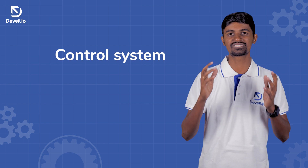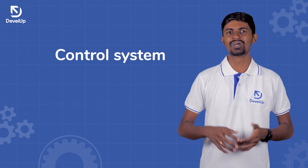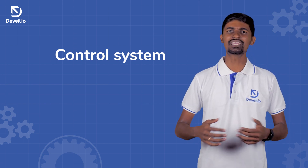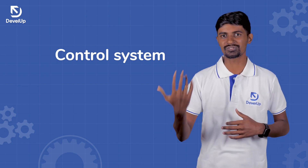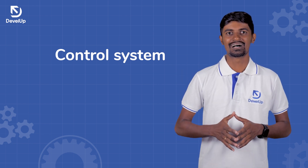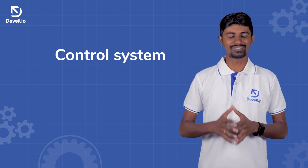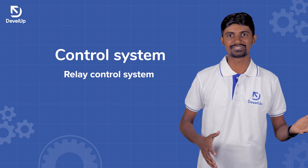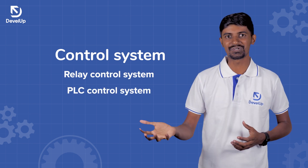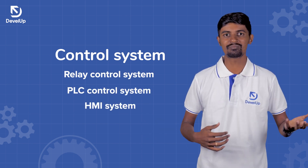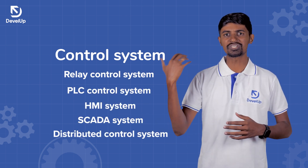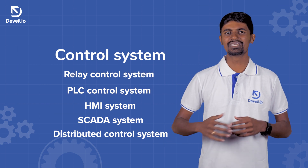Now, you have to go through control systems. The control systems used in Industrial Automation include the Relay Control System, PLC Control System, HMI, SCADA, and Distributed Control System (DCS).